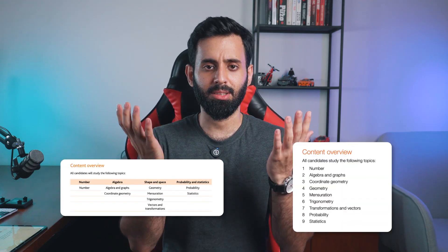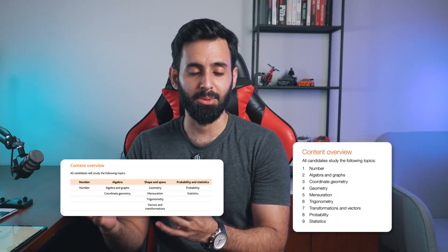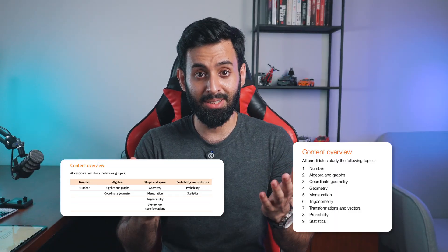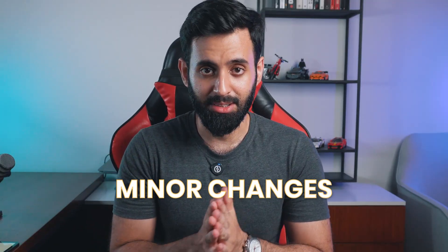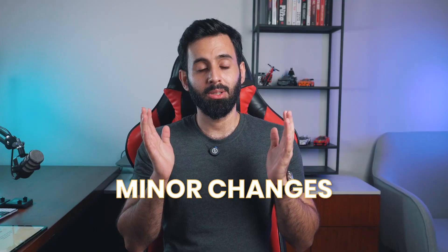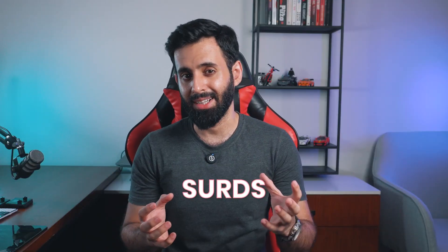If you look at the old syllabus and the new syllabus, you'll realize they're almost exactly the same. The only thing they've changed is the way topics are presented. So there's no major change, just some minor changes. Let's talk about the topics that have been added. Number one is surds — this involves the simplification and rationalization of surds.